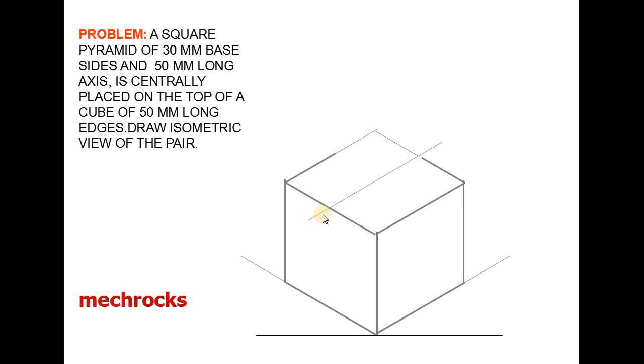Draw the midpoint line like this. Locate midpoint of this side and locate midpoint of this side and join the line. Similarly this side also. This is midpoint line. This is midpoint. Join these two. This is the center of the surface. Now we have to draw the square.